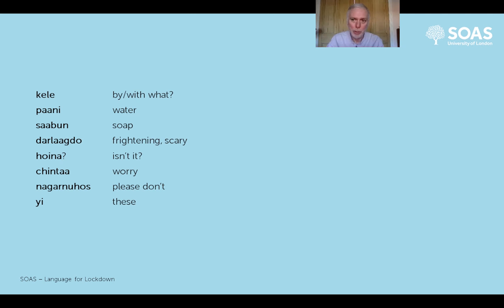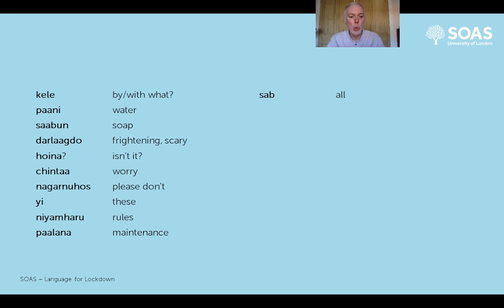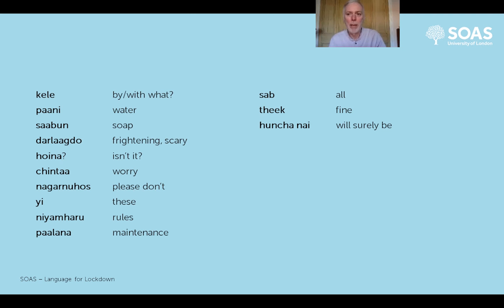'Yi' means 'these' - it's the plural of 'yo' meaning 'this'. 'Niam haru' - 'niam' is a rule or a law, and we pluralize it by adding 'haru' to make it 'rules'. 'Balana' means 'maintenance' - if you do 'balana', you maintain something. 'Sub' means 'all'. 'Thik' with a retroflex T - tongue curled back - means 'fine', 'good', 'absolutely okay'. 'Huncha nai' means 'will surely be'. So that tells us there's nothing to worry about if we follow the rules during the lockdown days.